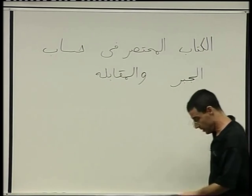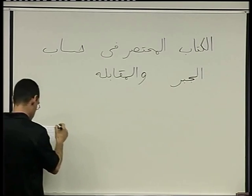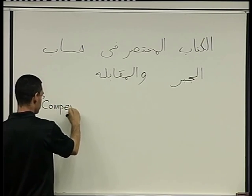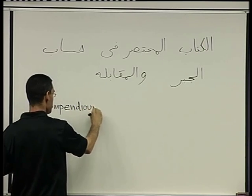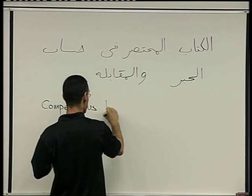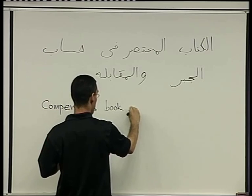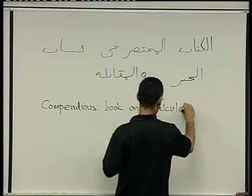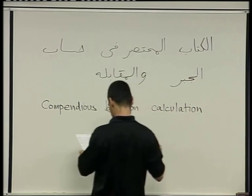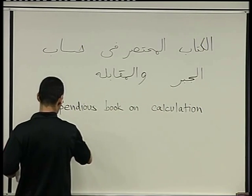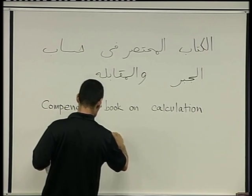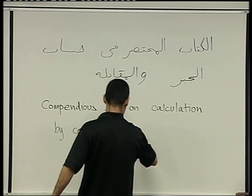And what this means, here's the translation to English: the compendious book on calculation by completion and balancing.